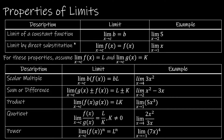We'll start with the limit of a constant function. As we talk about these, I want you to be thinking about the graphs — keep in mind that a graph is never an appropriate way to show work, but it's helpful. For instance, the limit of a constant function like y equals 1: what's the limit at any point along that line? It's going to approach 1 from the left and the right anywhere across that line.